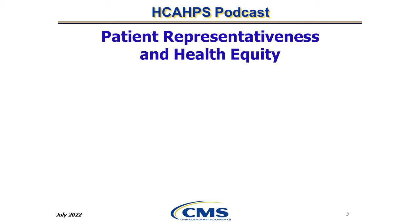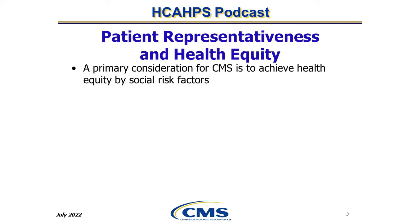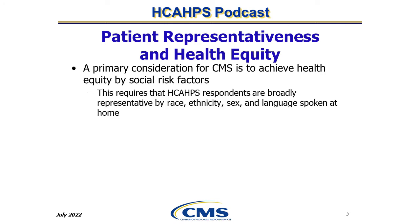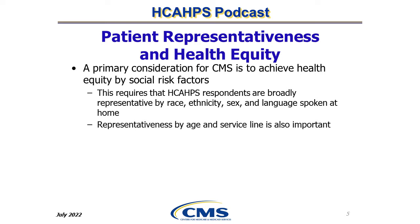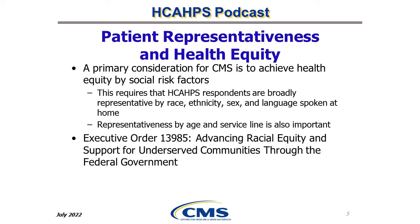A primary consideration for CMS is to achieve health equity by social risk factors. This requires that HCAHPS respondents are broadly representative of characteristics such as race, ethnicity, sex, and language spoken at home. Representativeness by age and service line is also important. Achieving good patient representativeness in the HCAHPS survey supports Executive Order 13985, advancing racial equity and support for underserved communities through the federal government.